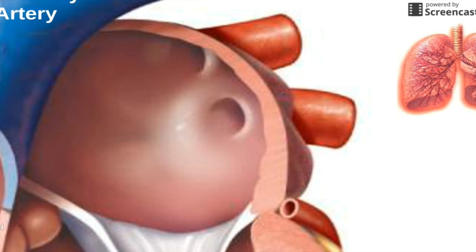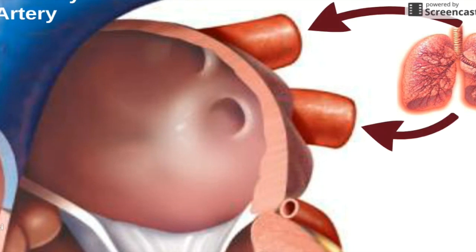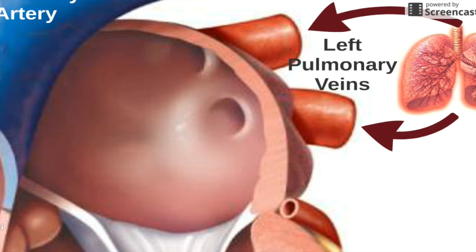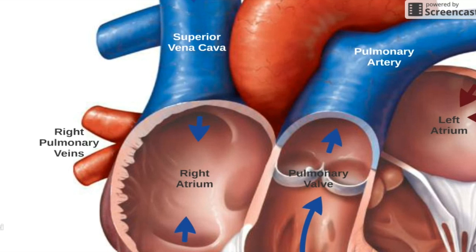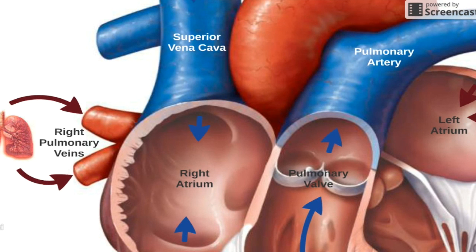As soon as the red blood cells are oxygenated, they will flow from the lungs through the pulmonary veins and into the left atrium. You may notice that the pulmonary veins shown here are labeled left pulmonary veins. There are also right pulmonary veins, which also carry oxygenated blood from the lungs to the left atrium. These are called right pulmonary veins because they enter the left atrium from the right side of the body, whereas the left pulmonary veins enter the atrium from the left side of the body.